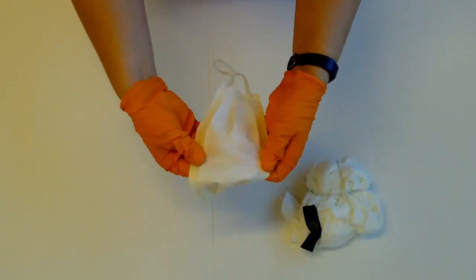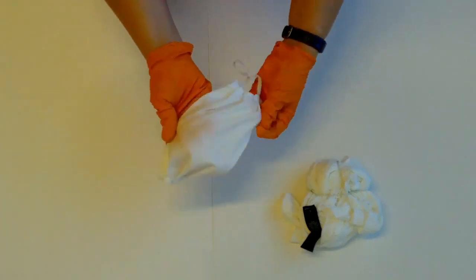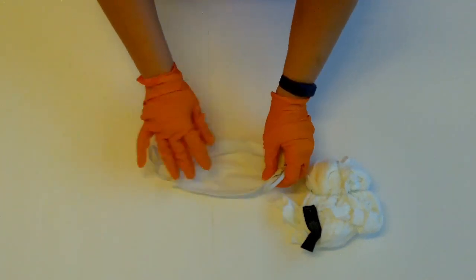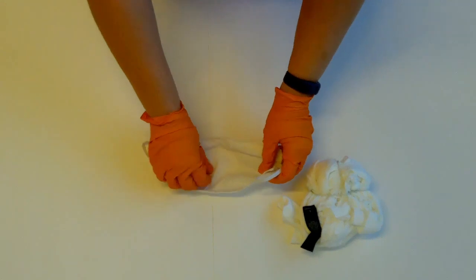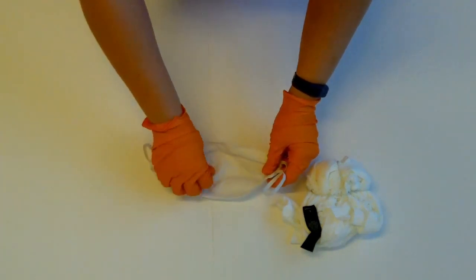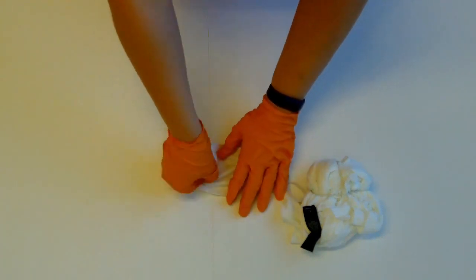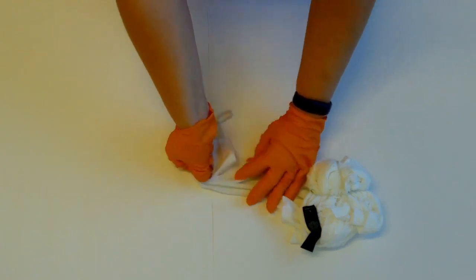For the mask, open the pleats and lie it down. Decide your center point, in the center or off to the side. Pinch and twist, just like the shirt, and secure with rubber bands.